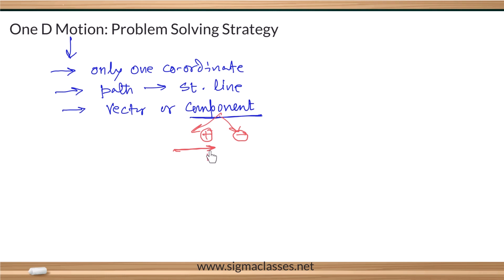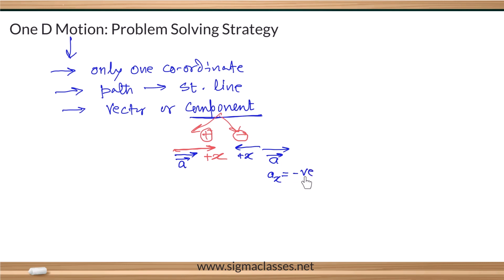For example, if this is the positive x-axis and this is your vector, and you have taken this direction to be the positive x-axis, then in this case the x-component of this vector is negative. Since we are dealing with the components of a vector, the sign matters.